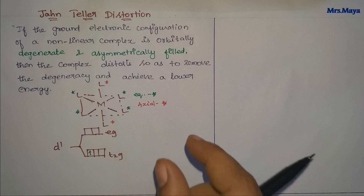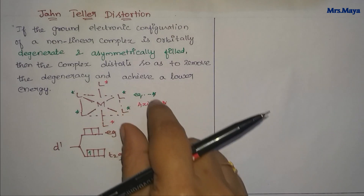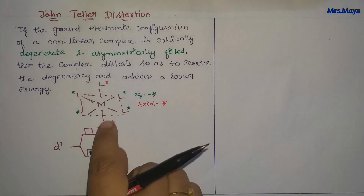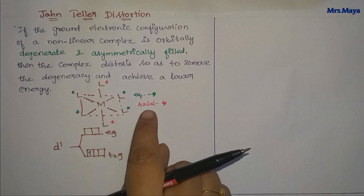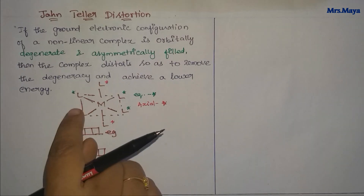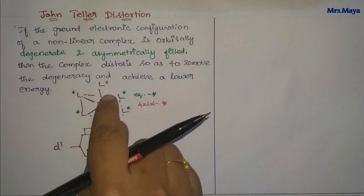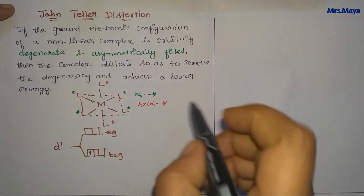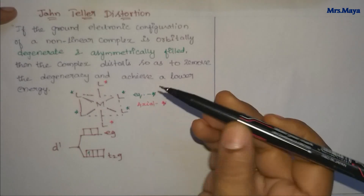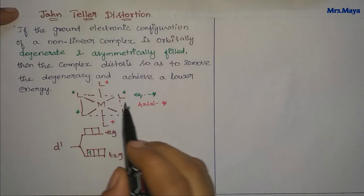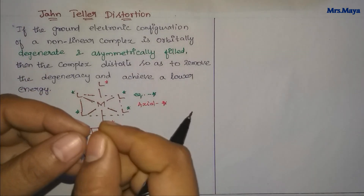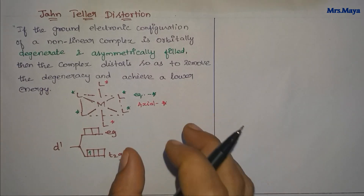If you look at the distortion, there is a distortion in octahedral geometry. This is the axial bond — the axial bond is marked in red. The equatorial bond is marked in green. If you look at the axial bond, there is a plane in the top position. The axial bond is elongated or compressed. This is the distortion.